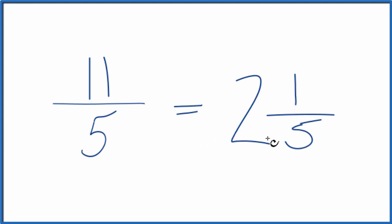We can check that. 2 times 5 is 10, plus 1, that's the 11, and then the denominator is the same.